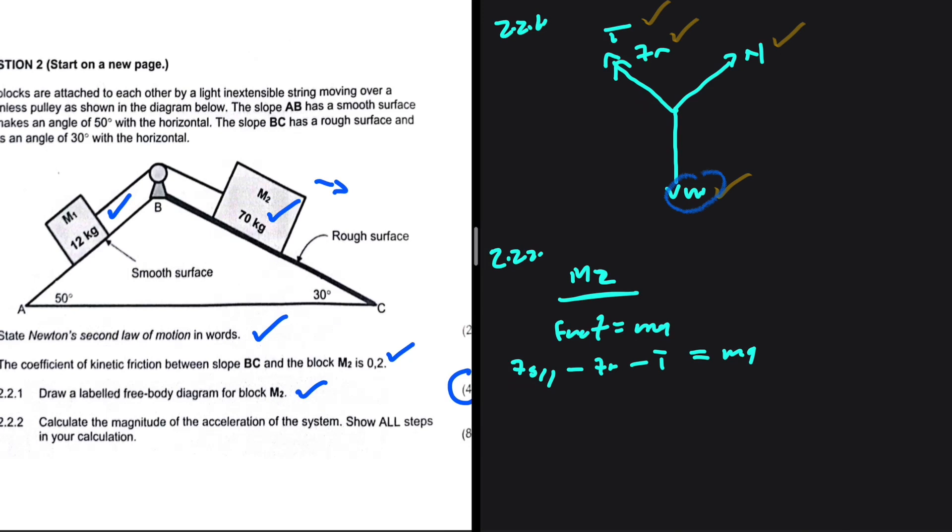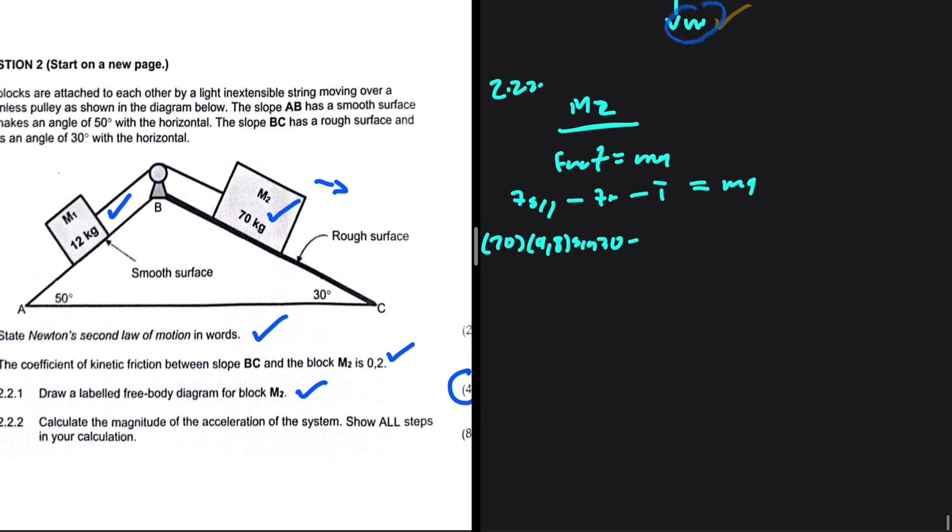So how do we calculate Fg parallel? That is Mg sin θ. So we're going to have 70 multiplied by 9.8 multiplied by sin 30° minus the frictional force. The frictional force, that is the coefficient multiplied by the normal force. Our coefficient is 0.2.